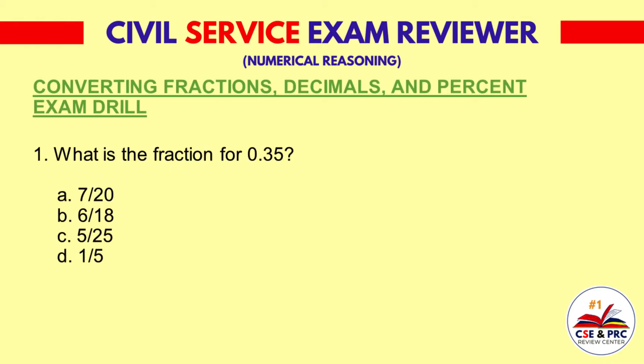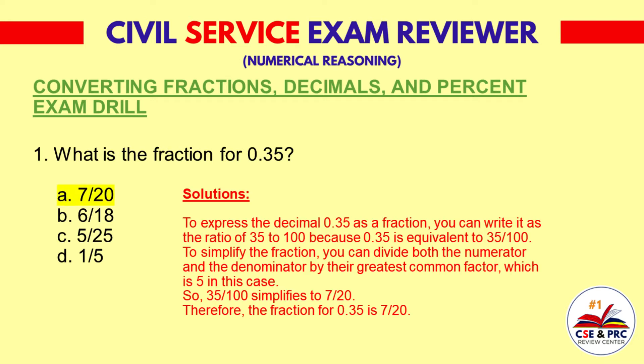1. What is the fraction for 0.35? a) 7 over 20, b) 6 over 18, c) 5 over 25, d) 1 over 5. The answer is A, 7 over 20.